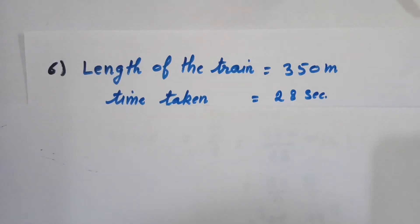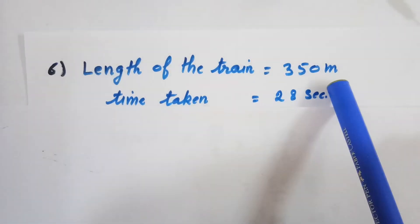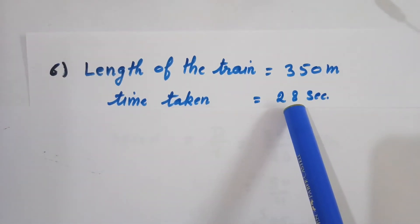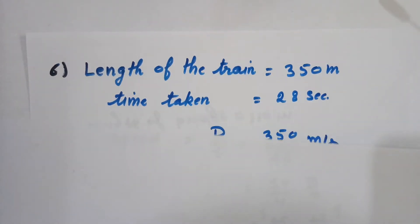Here the question is that the length of the train is 350 meters and time taken by this train to cross a pole is 28 seconds. We need to find the speed of the train.